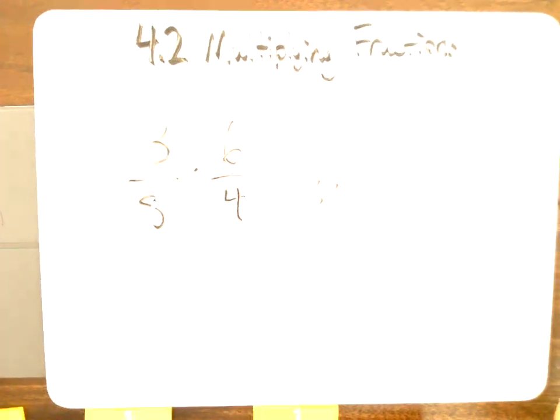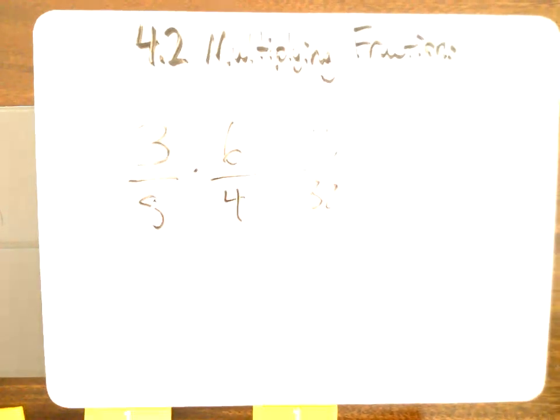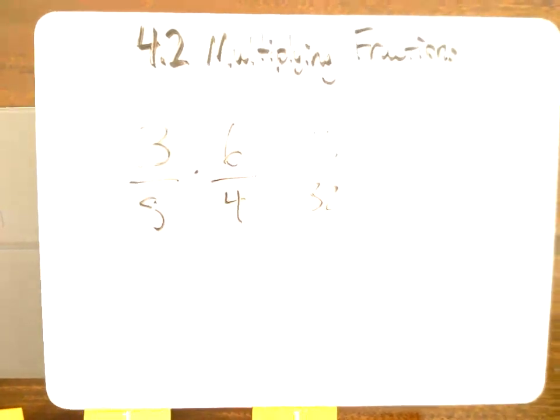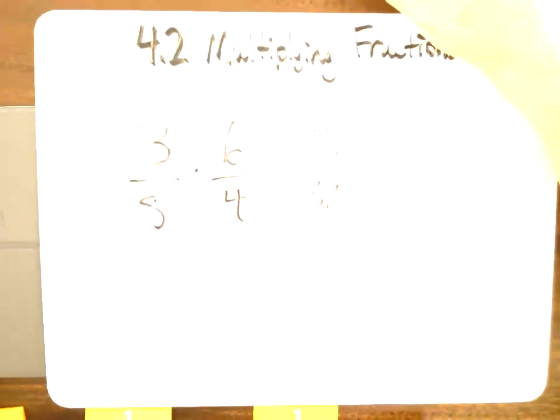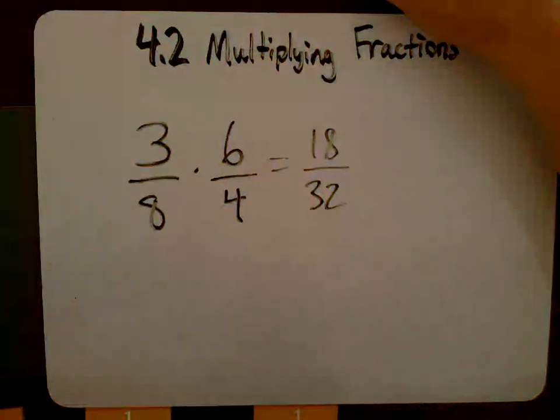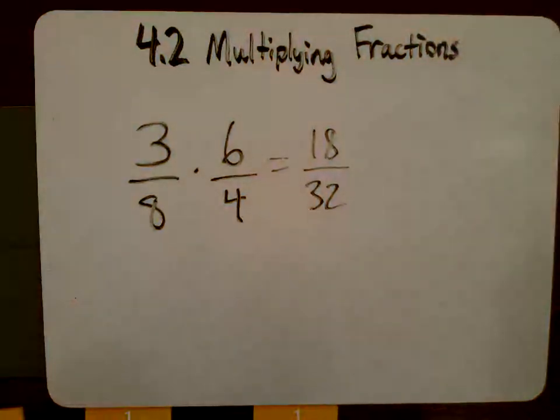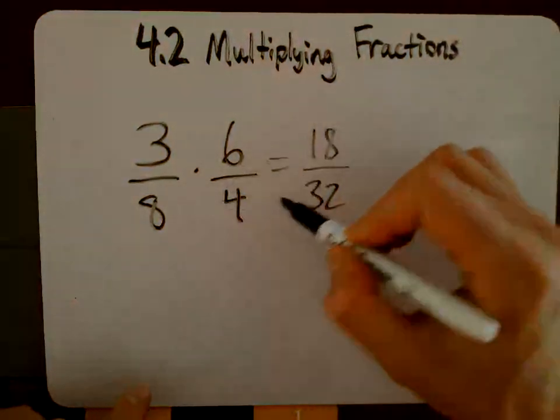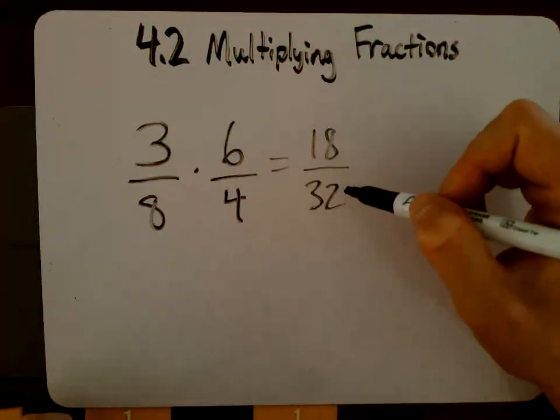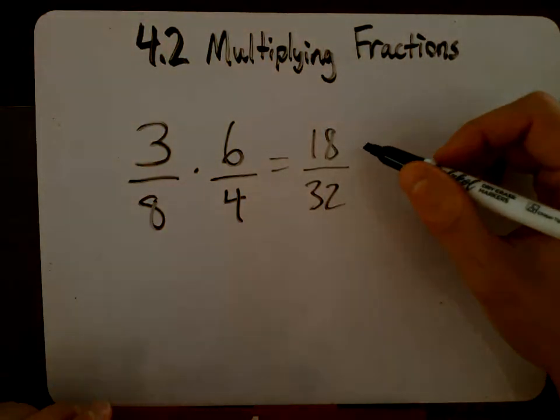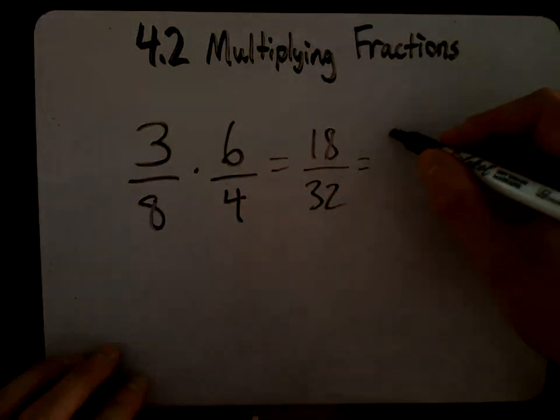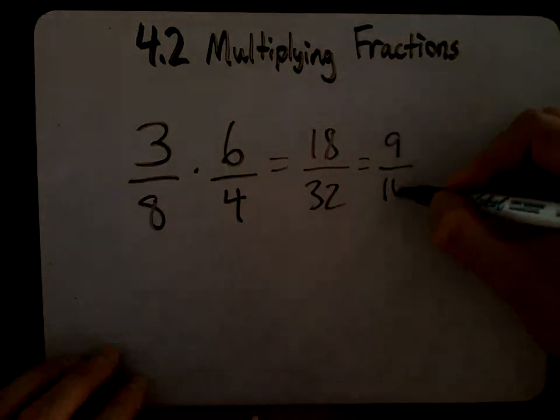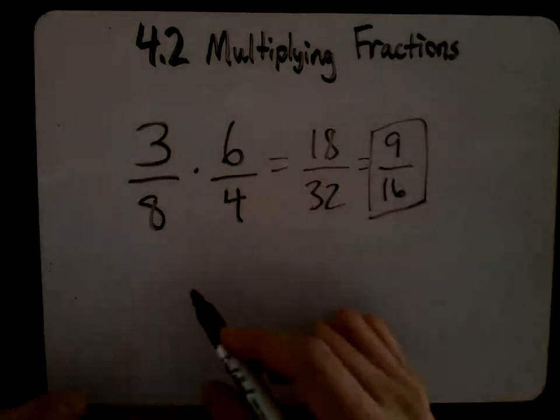And, of course, we would want to simplify this. Ooh, it got super bright, didn't it? Let's see. How do I fix that? Not that way. Maybe over here. Here we go. Hopefully that didn't ruin the whole video. 18 over 32, right? So we just need to simplify that. We can divide them both by 2. We would get 9 sixteenths.